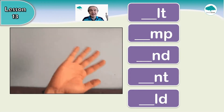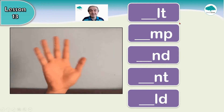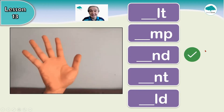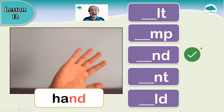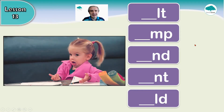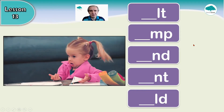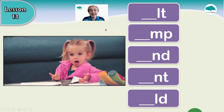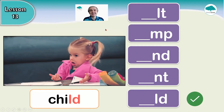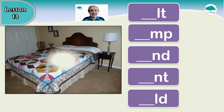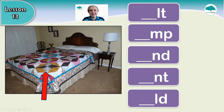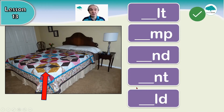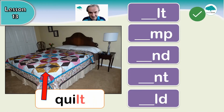This one — you can wave. Do you remember the sound? ND — hand. And this one, who is she? She is a child, LD. Remember on your bed — what is this? It is quilt. What sounds? LT — quilt.